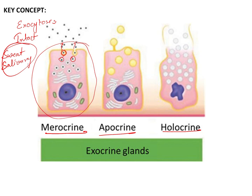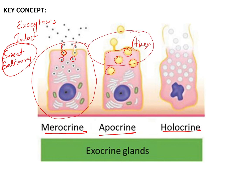In apocrine secretion, unlike merocrine where secretion is by exocytosis, the secretory granules collect at the apex of the cell. These granules accumulate near the apex, and then the whole apical portion of the cell is pinched off. That is why it is called apocrine.